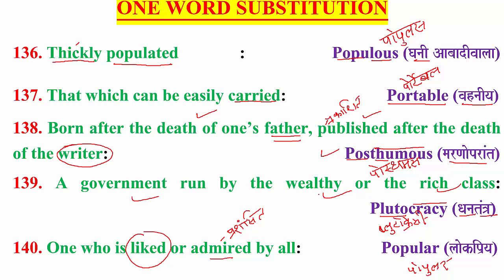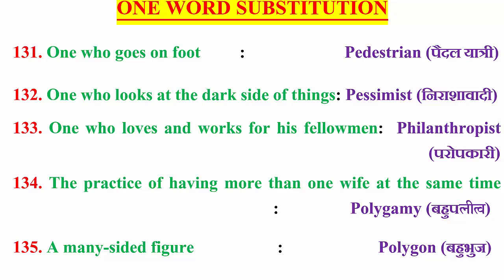So today's words were: populous, portable, posthumous, plutocracy, and popular. Before completing, let us go back to last class words: pedestrian — one who goes on foot; pessimist — nirashavadi — one who looks at the dark side of things.